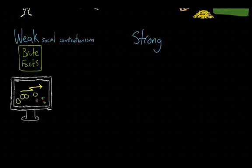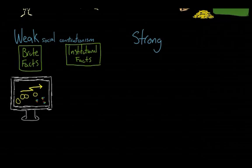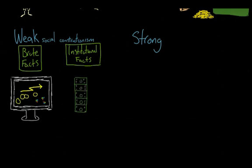Those brute facts are separate from institutional facts, which are created by social conventions and do rely on other facts. So, for example, money depends on the paper that we have given value.